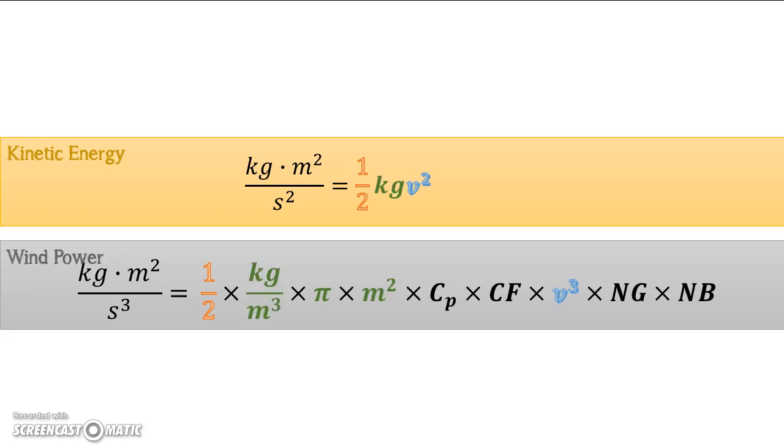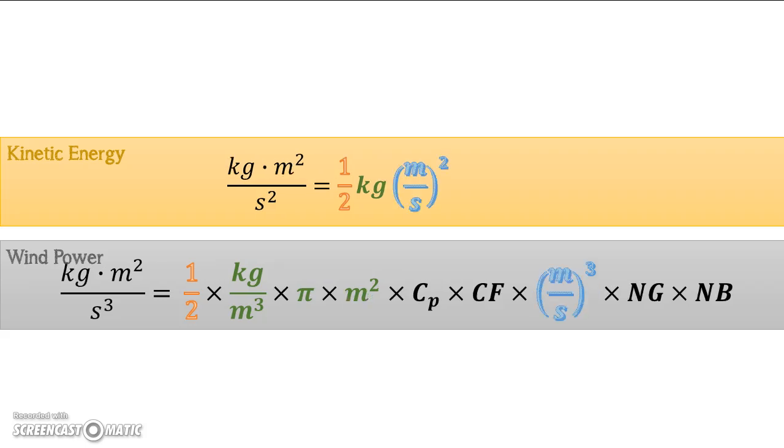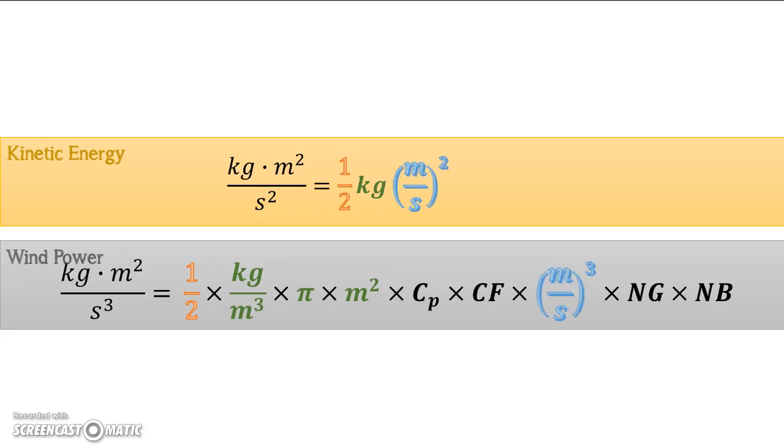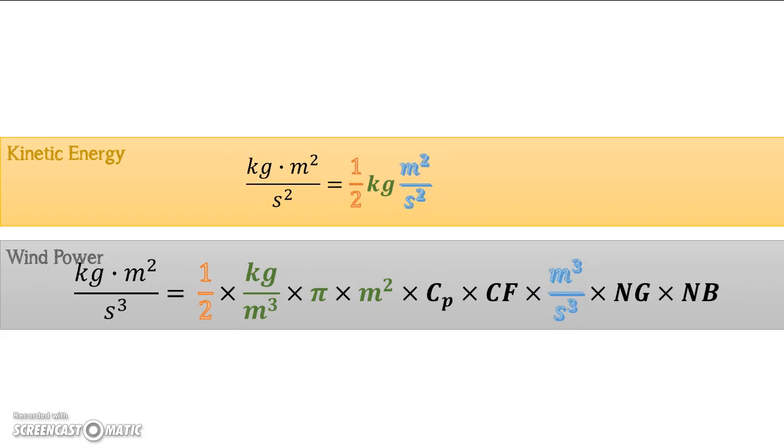And mass is really kilograms. And then your density is kilograms over cubic meters times pi times the radius of the blade length meter squared. And that's going to give you your density times area. And then we're going to look at the velocity, which is actually meters per second. It'll make the canceling look nicer at the end.